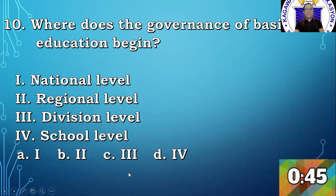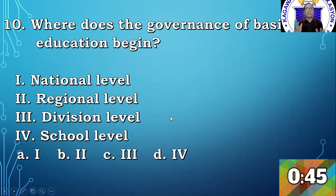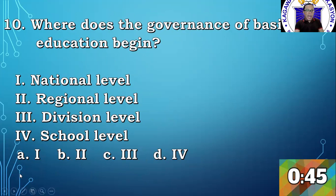Number 10. Where does the governance of basic education begin? Obviously at the national level. The regional, division level, school level, and learning centers are part of what we call field offices. Again, the reference is Republic Act 9155. Download it. So the correct answer here is national level, letter A.